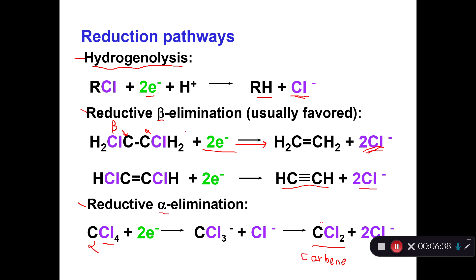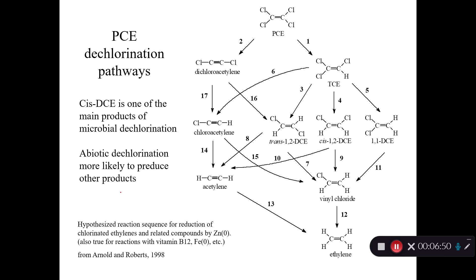These are the kinds of things that can happen. Hydrogenolysis and reductive beta elimination are the two most common. In some weird cases where you have the chlorinated methanes, you can get reductive alpha elimination.